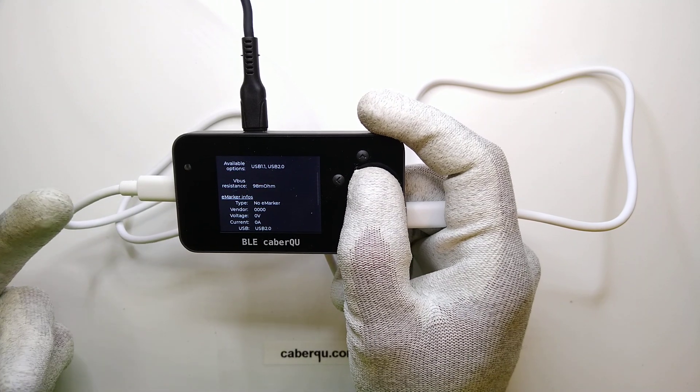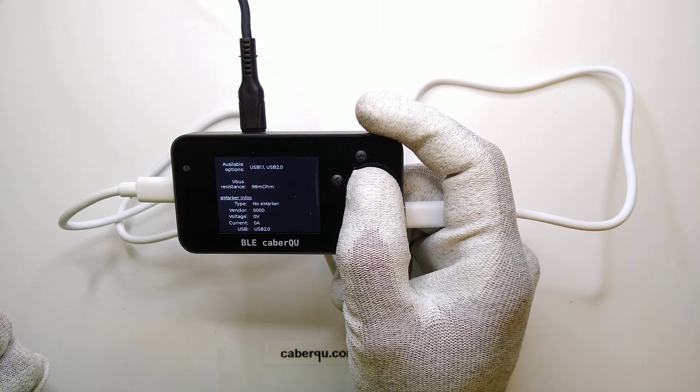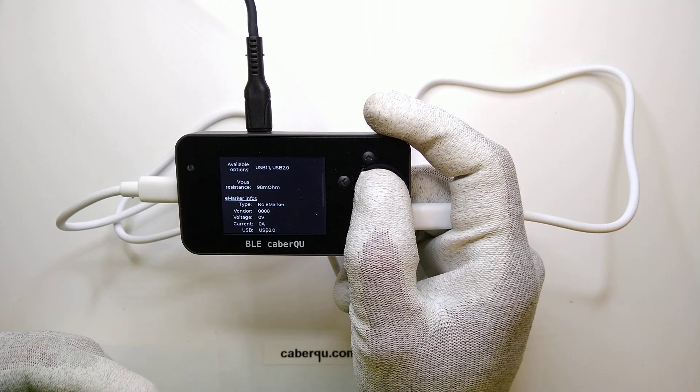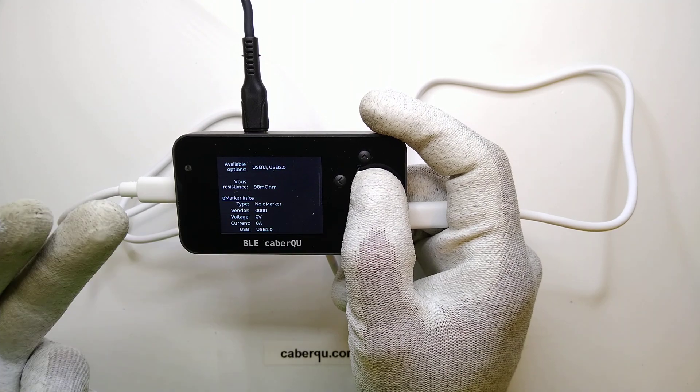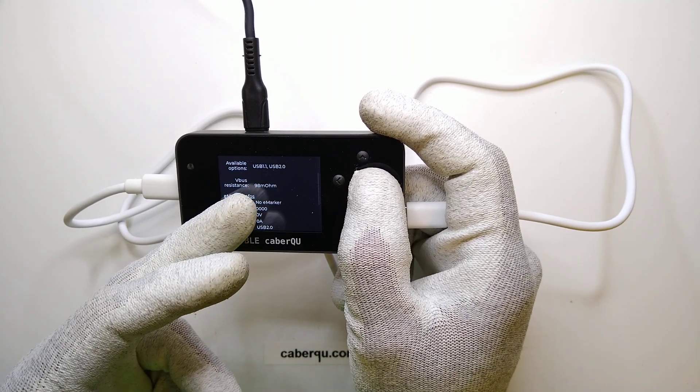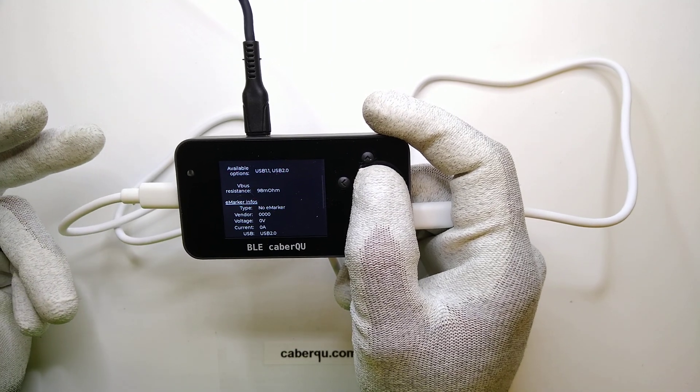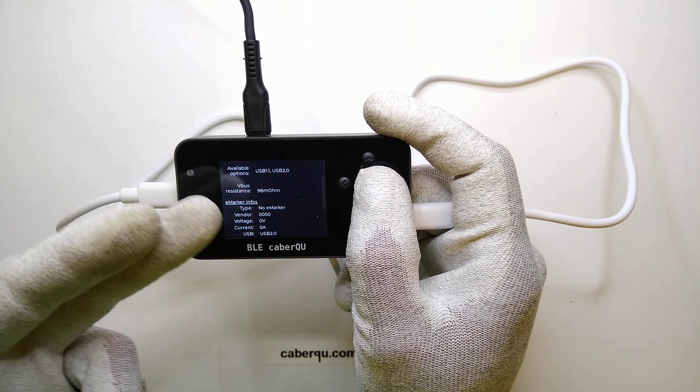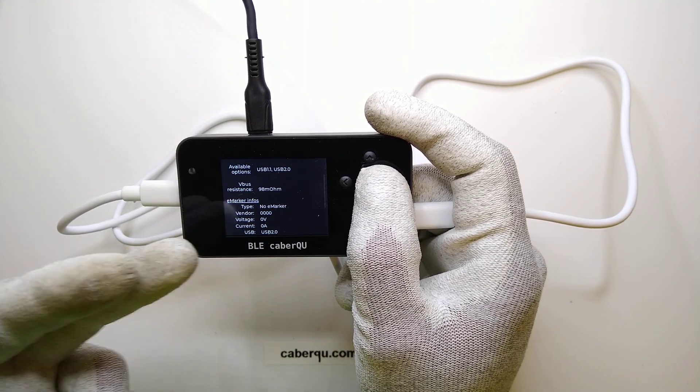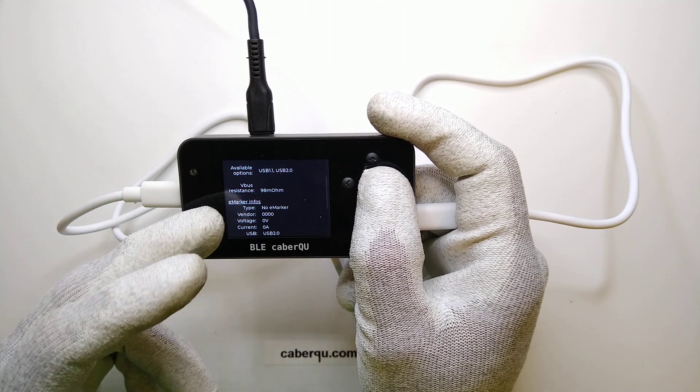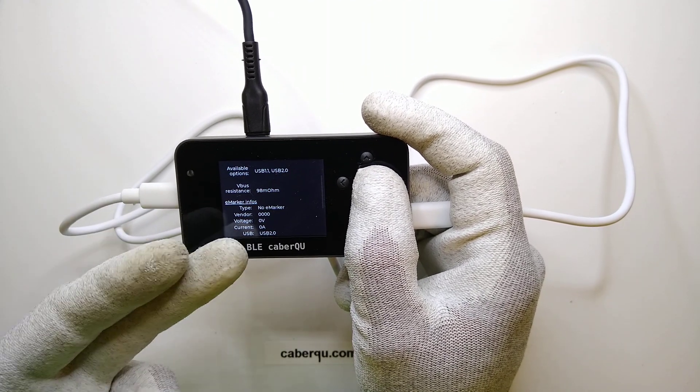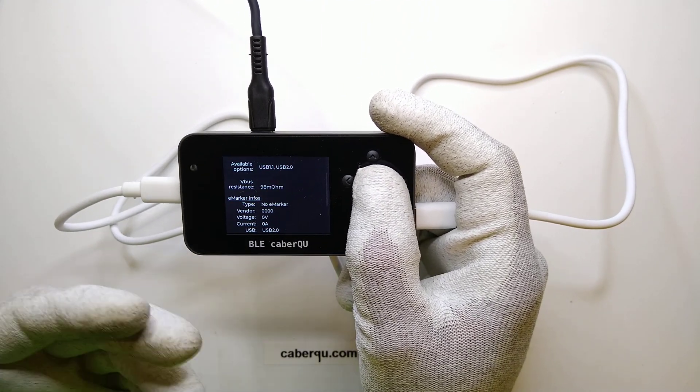If we take a look at the V bus resistance, it's 100 milliohms. This means that at a 10 amp power rating, the voltage drop is almost 1 volt over the cable length itself. So if you're starting at 5 or 5.25 volts which normal chargers put out without negotiations...